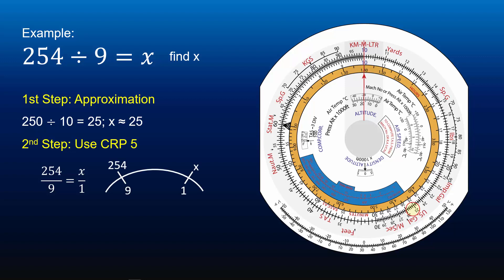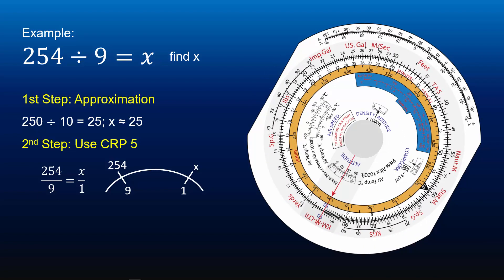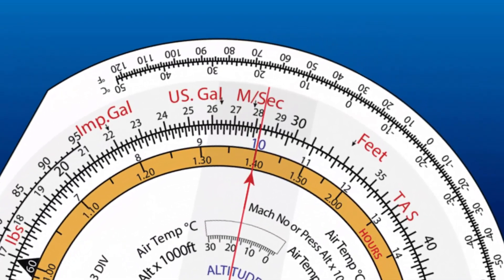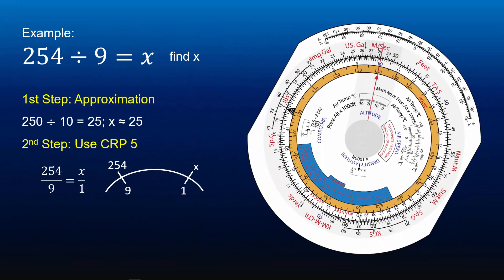Locate 254 on the outer scale and turn CRP5 so that 254 is on top, then align the cursor with 254. Find 9 on the inner scale, rotate the inner scale and align 9 with the cursor. Align the cursor with the blue 10 index on the inner scale, then read off the answer on the outer scale opposite to the 10 index — it is 28.2. From the CRP5 operation we know X is equal to 28.2. To confirm the answer, we check back with the approximate value of 25. Since 28.2 is in the same ballpark as 25, the answer is X equal to 28.2.